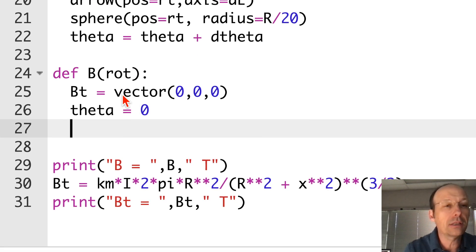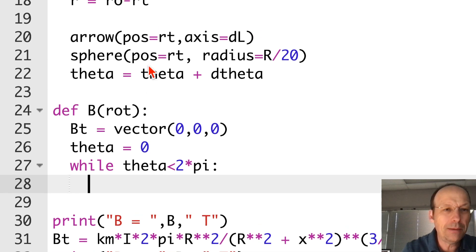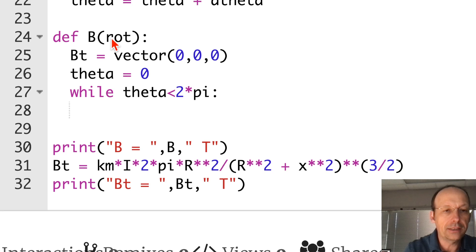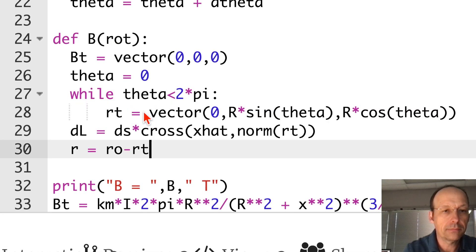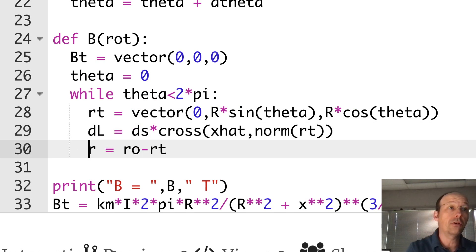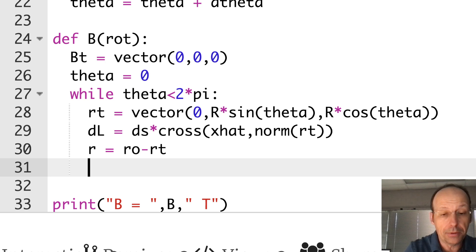I'm going to keep N the same. So now it's just going to look the same. While theta is less than 2 times pi, so it means go around the whole circle. I need to calculate that RT, which is the same. I'm just going to copy that. Except that needs to be indented. So I still calculate RT, I calculate DL, but I don't draw anything. I'm not going to draw the arrows. I'm not going to draw the spheres.